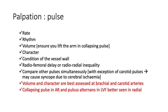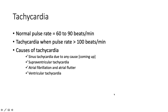Moving on to the pulse. You need to palpate the pulse for rate, rhythm, volume, character, and condition of the vessel wall. Check for radio-radio and radio-femoral inequality. Compare both pulses simultaneously with the exception of the carotid — if you compress both carotids at the same time, your patient will pass out due to cerebral ischemia. Volume and character are best assessed at the brachial and carotid arteries. The collapsing pulse of aortic regurgitation and pulsus alternans in left ventricular failure are best appreciated at the radial.